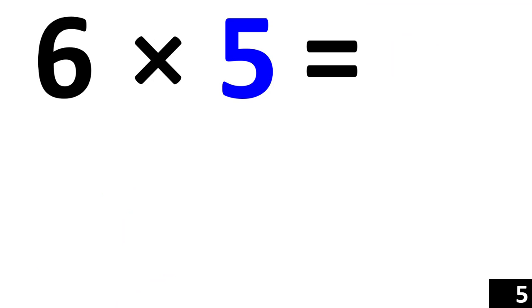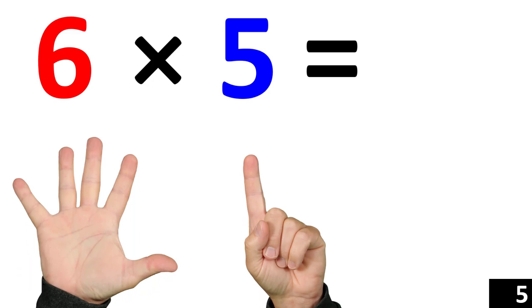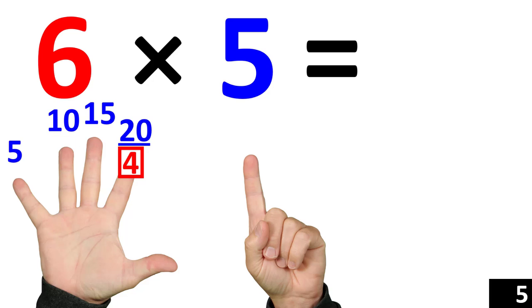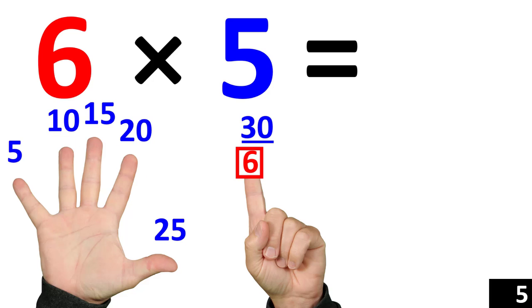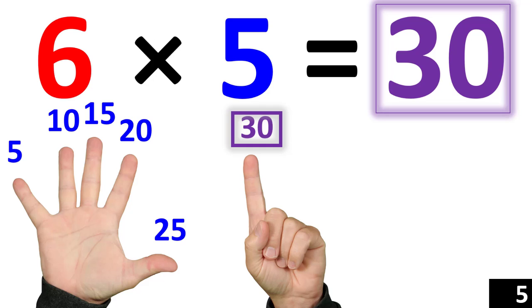6 times 5 is the same thing as counting by 5 six times. 5. 10. 15. 20. 25. 30. This means that 6 times 5 is equal to 30.